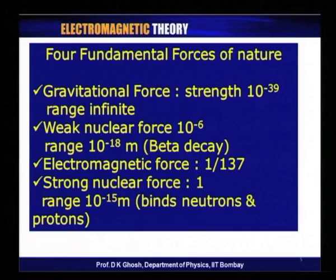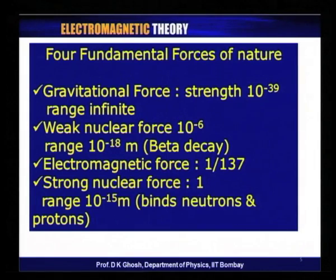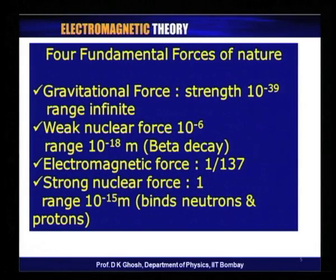Before we begin the process of electrostatics, let us look at this force in a little more detail. In nature we have basically four types of forces — the four fundamental forces of nature. The weakest force is what keeps our solar system, the planets and the sun, in place: the gravitational force. This is an attractive force, like the electromagnetic force; it is of infinite range, a long-range force, but its strength is very small.